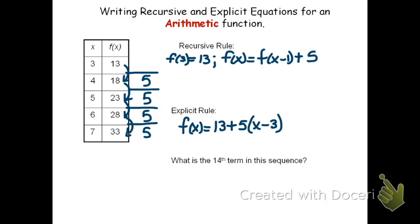Now, we can use that explicit rule to help us find the 14th term, which is what it's asking for down below. The nice thing about the explicit rule is you don't need to know the previous number to be able to do this. If I want to find out what the 14th term is, I simply substitute 14 for x.